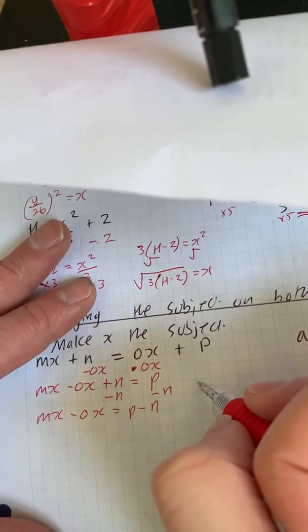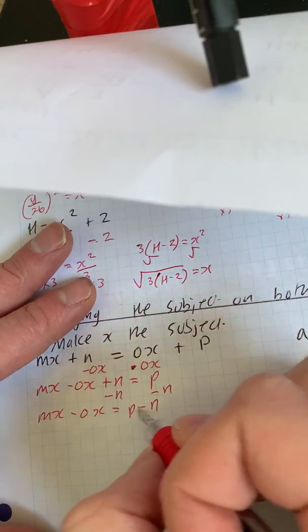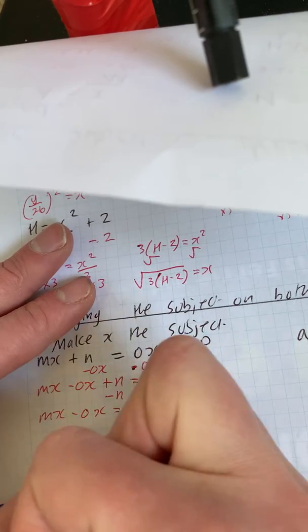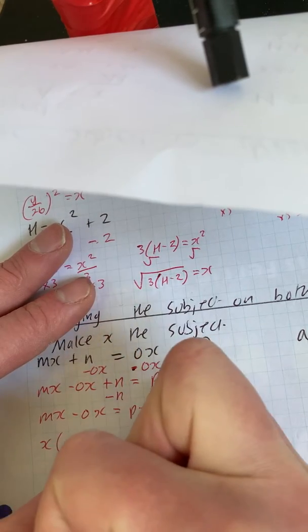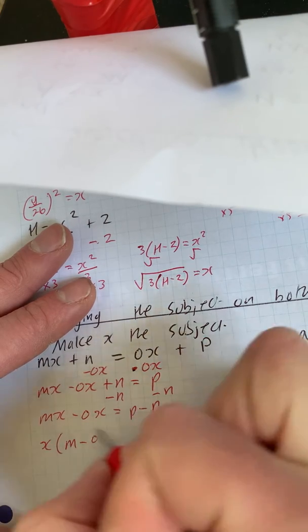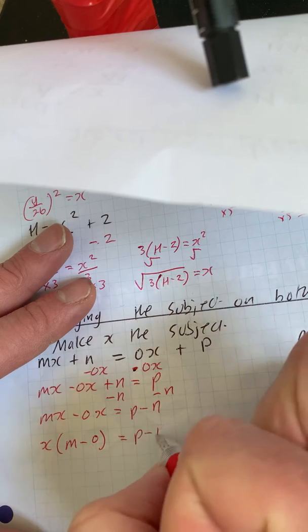Now this is where there's a little trick, we need to get x's on their own. Now there's x's in both of these terms, so there's a factor of x in both. So we can factorise, because x times m is mx, and x times o is ox, equals p minus n.